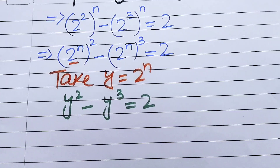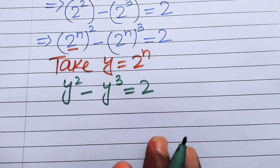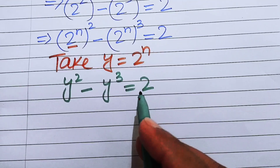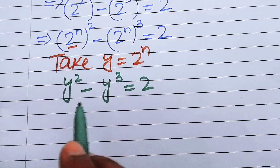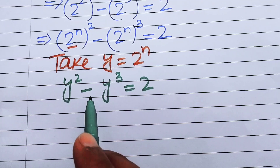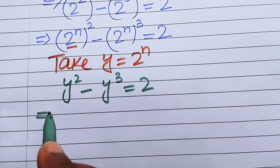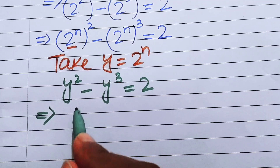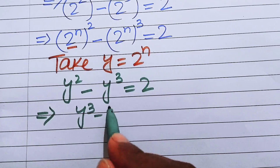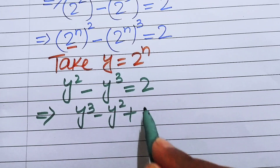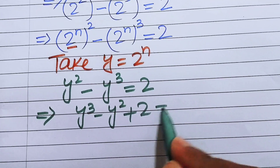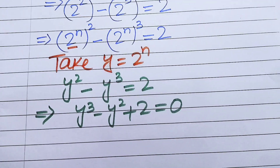We rearrange the equation, moving all terms to the left-hand side, and it becomes y cubed minus y squared plus 2 equals 0. Now we make the factors of this cubic equation.